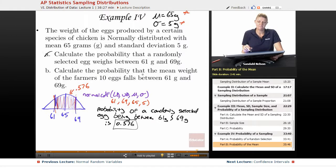Calculate the probability that the mean weight of the farmer's 10 eggs fall between 61 and 69 grams. Okay, so now we have a different problem. And the key thing to notice here is that now we have a sample size. So when you have a sample size, you basically always need to use it. That's kind of like the rule of thumb.